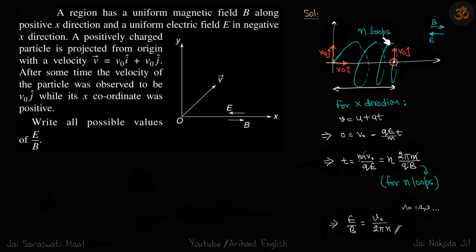Now we're going to write one equation for the x-direction. For the loops, we can say v equals u plus at. So final velocity is 0, initial is v0, and the acceleration is minus qE by m.